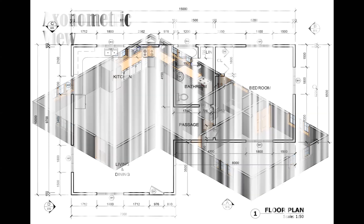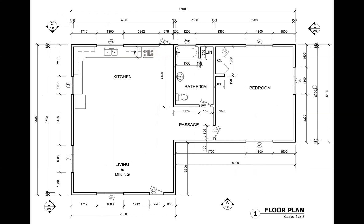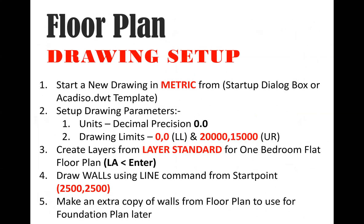This is the floor plan that we're going to be drawing. You may have drawn it already in your manual drawing class, but we are going to be doing it this time in AutoCAD. I'll take you through step by step. We have done step one already, which is to start a brand new drawing and choose metric — either from the startup dialog box where you choose metric or imperial. We chose metric, and there's another option where we could have used the template ACAD ISO.